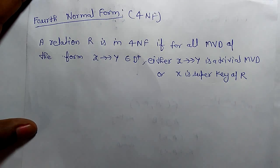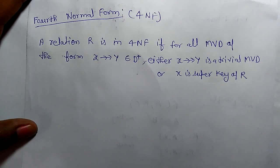Hi, today we are going to learn fourth normal form. A relation R is in fourth normal form if for all multivalue dependency of the form x multivalue determines y